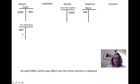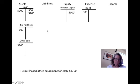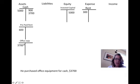The next transaction: he purchases office equipment for cash of $3,700. You start with the cash value and ask what happened to cash, then put it into an office equipment account. It's a long-term asset because it's something that's going to last longer than a year. So we have a credit to cash and a debit to another asset called office equipment.